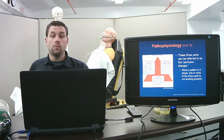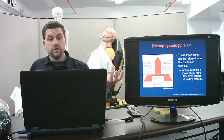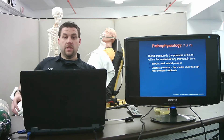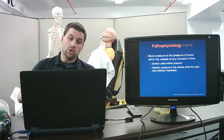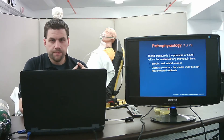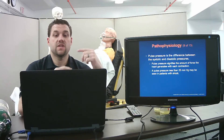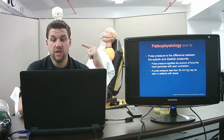The perfusion triangle has three parts, and when a patient is in shock, one or more of them isn't working: the heart is failing, the blood vessels are failing, or there's not enough blood — a fluid problem. Blood pressure is the pressure of blood within vessels at any given time. Systolic is peak arterial pressure; diastolic is when the heart is resting. Pulse pressure is the difference between systolic and diastolic, and it signifies the force the heart generates with each contraction.